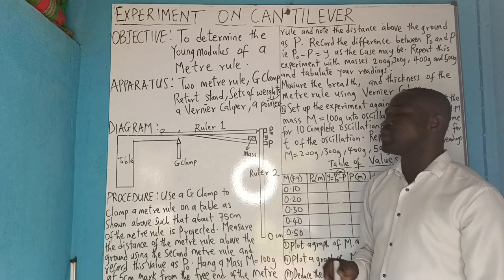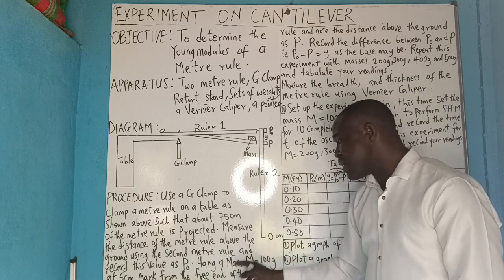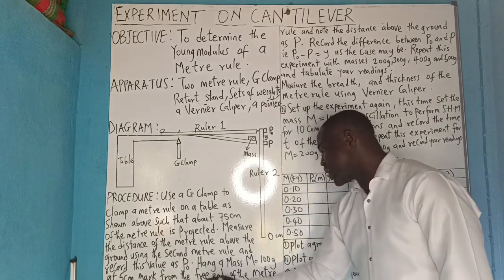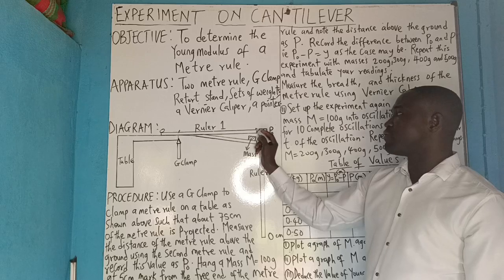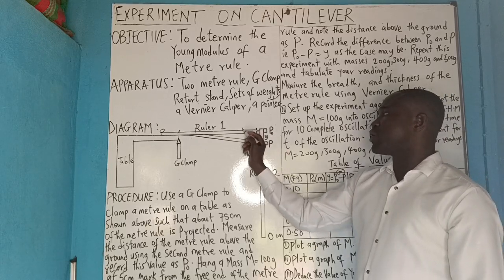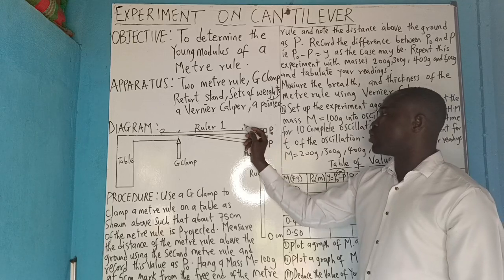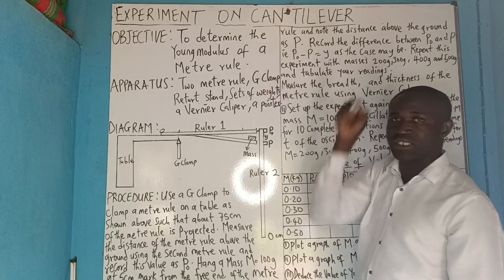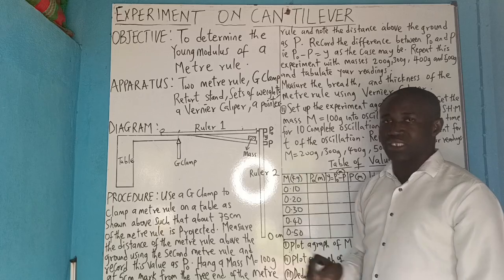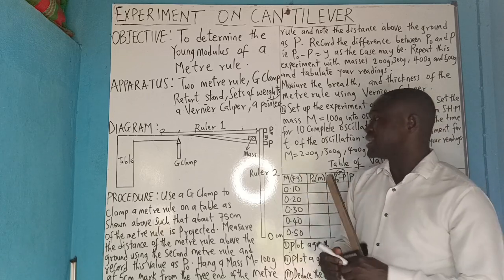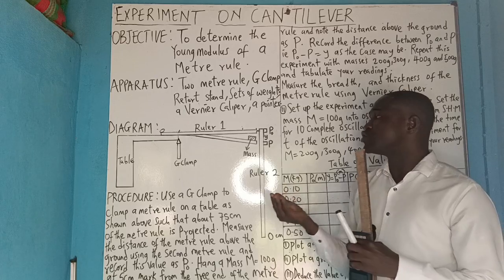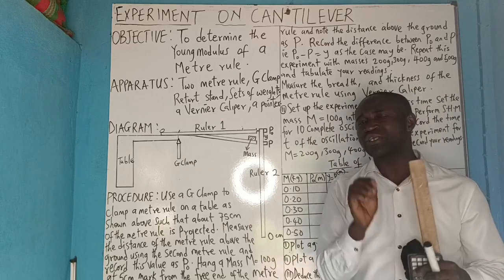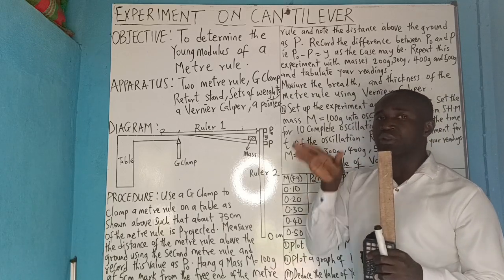Once you have noted P₀, hang a mass M equal to 100 grams at 5 cm from the free end of the meter rule. When you put the mass on it, something will happen — that mass has weight and will try to depress or bend the meter rule. That is where the principle of bending or depression comes in.